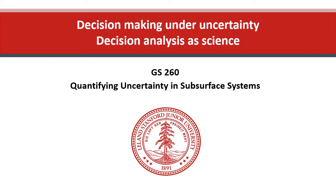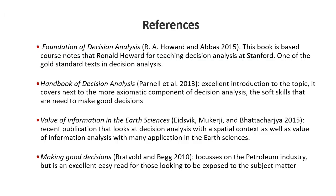In decision making under uncertainty, we need to talk about decision analysis. Here I'll give an overview of decision analysis as a science — it's both a prescriptive and normative science. It describes a set of actions that are logical and that you can do in any decision making process, and it's normative in the sense that we'll do some calculations to quantify our actions and our decisions.